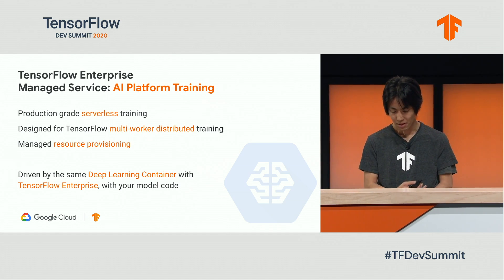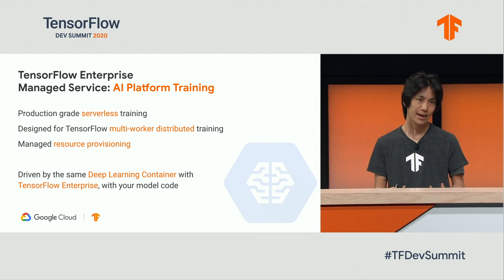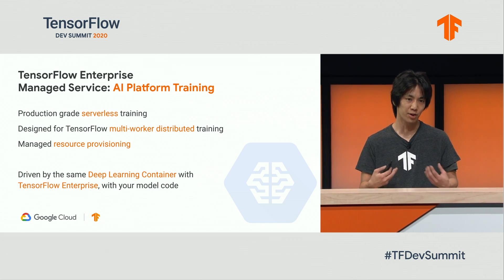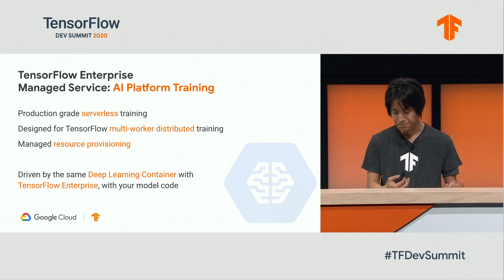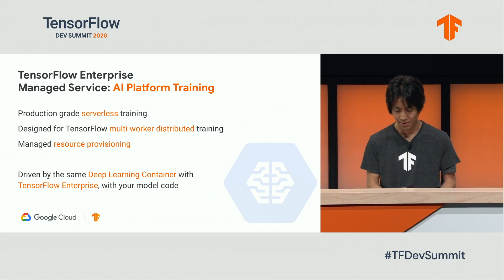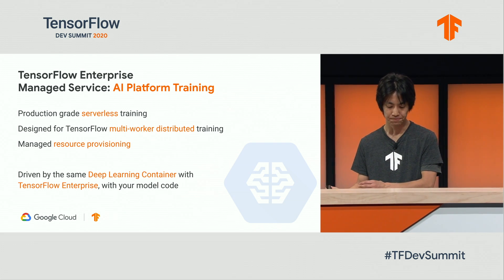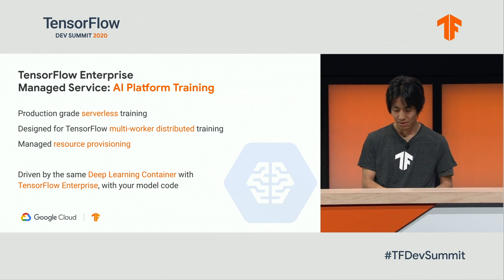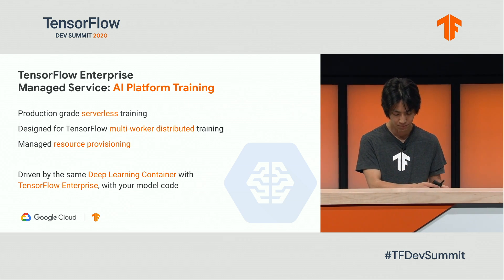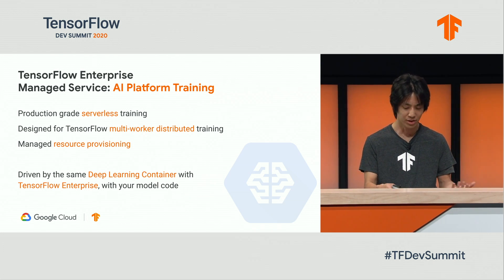Once you have a satisfactory model after many iterations of experimentation, it is time to train your model at full scale. It may not fit into one machine, and you may want to take advantage of the distributed training facility that TensorFlow offers to support a large scale of data and model. For this, AI Platform Training is a managed service that takes care of the distributed training clusters and all other infrastructure complexities on your behalf. More importantly, it drives the same TensorFlow Enterprise container image — exactly the same environment you used to build your model — so you can be confident that your model trains at full scale under the managed training service.